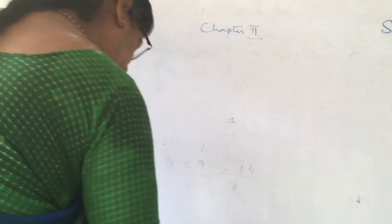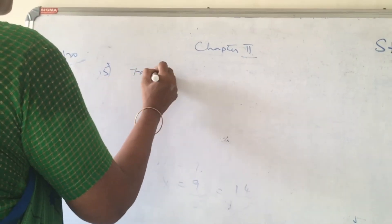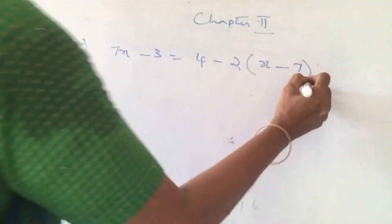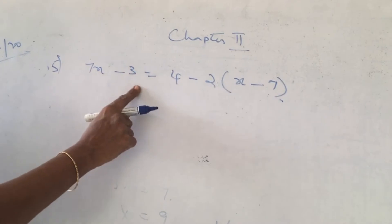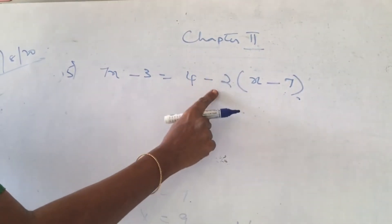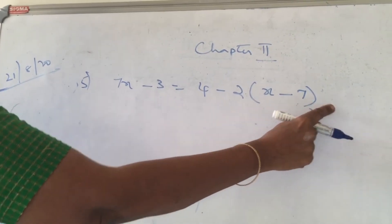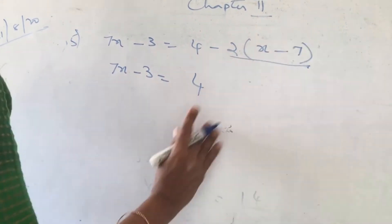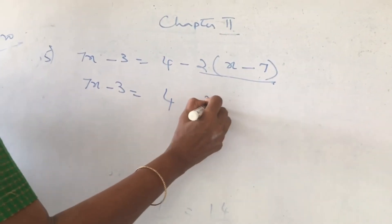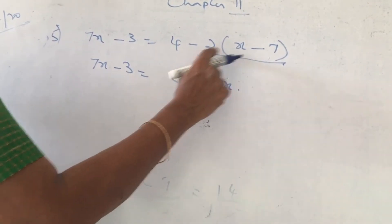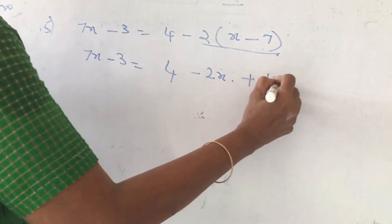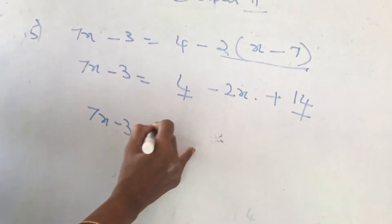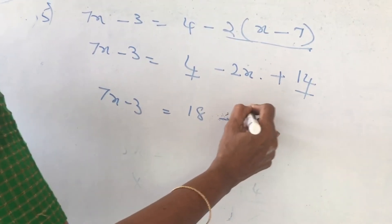Fifth sum: 7x minus 3 is equal to 4 plus 2 into x minus 7. The bracket means multiplication, so you should expand first. Minus 2 into x gives minus 2x; minus into minus gives plus 14. Because 4 and 14 are like terms, 4 plus 14 is 18. So we have 7x minus 3 equals 18 minus 2x.